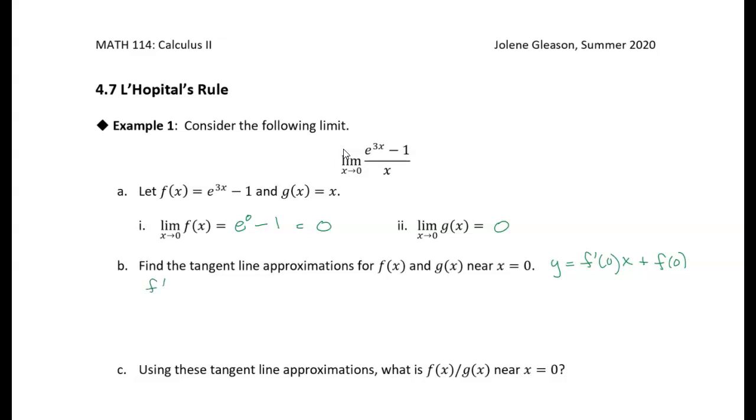So f prime of the numerator is 3e to the 3x. And if we look at f prime at 0, then we just have 3 times e to the 0, which is 3. And then we need the value of the original function at 0. So if we plug 0 into the numerator, we get 0. We already got that. That's up in part a. So the tangent line approximation for the numerator is y equals 3x.